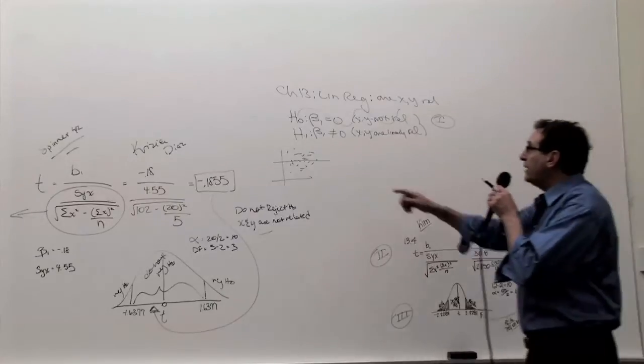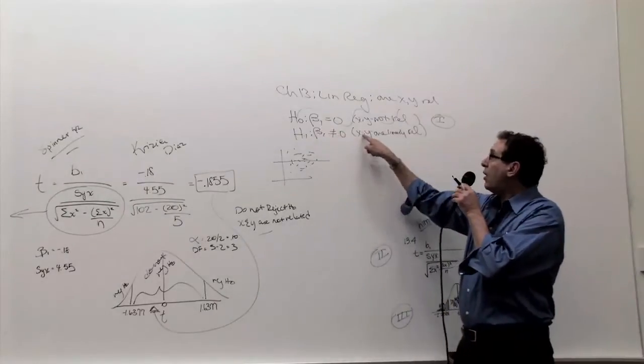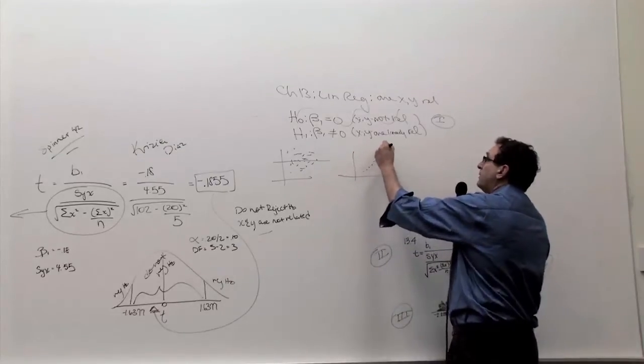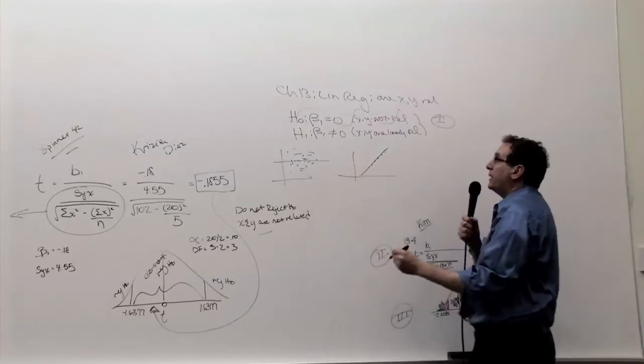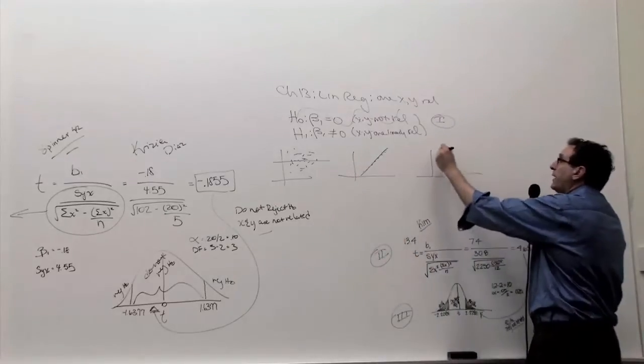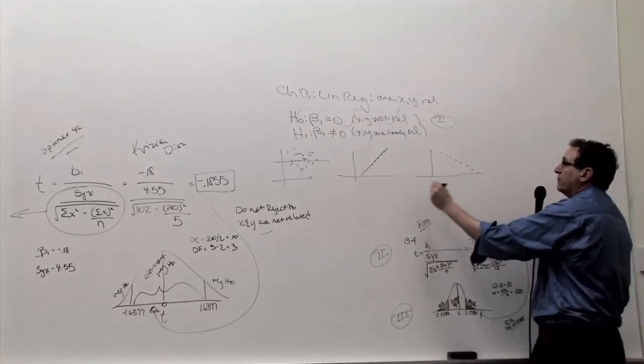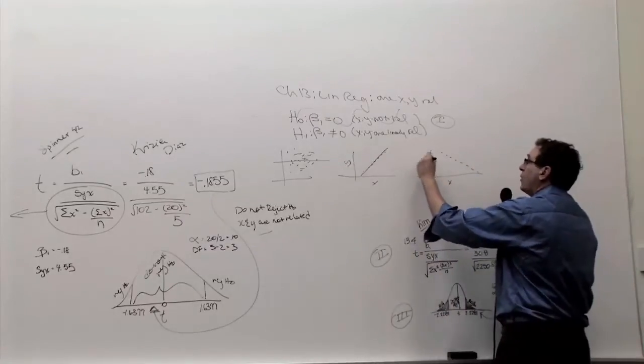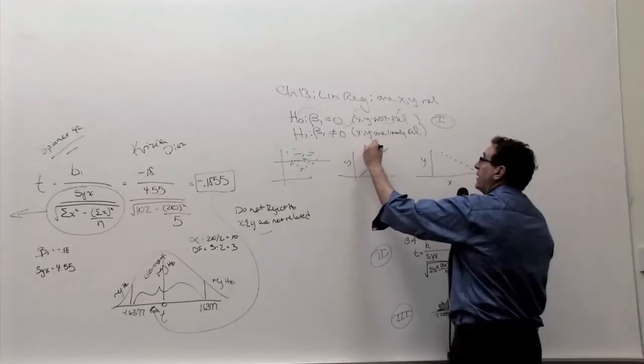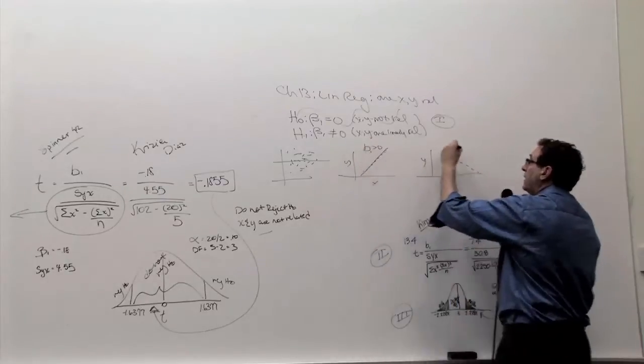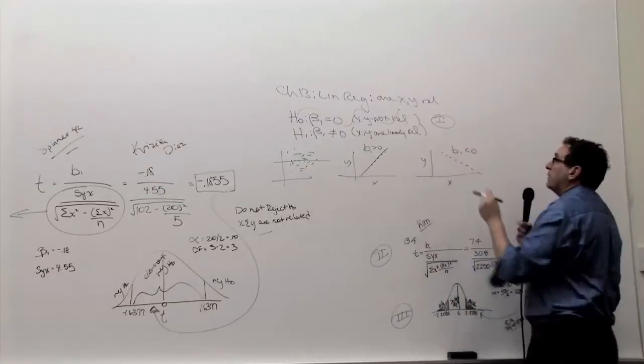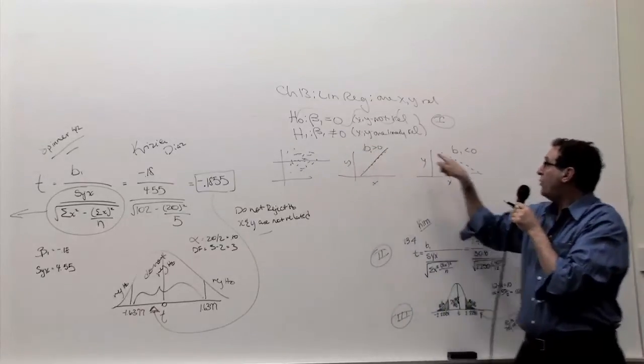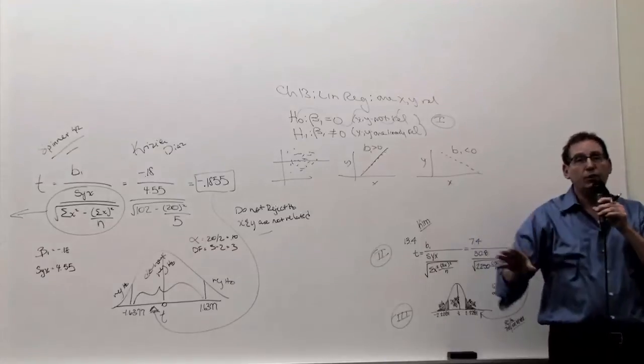Now, what kind of, when we say x and y are related, what do we mean by that? There are two possibilities. Either it means they're positively related, as one gets bigger, the other gets bigger. Or they're inversely related, as one gets bigger, the other gets smaller. Remember, this is x, this is y. So in this case, the slope would be greater than zero. In this case, the slope would be less than zero.